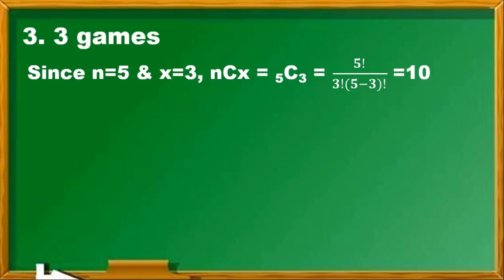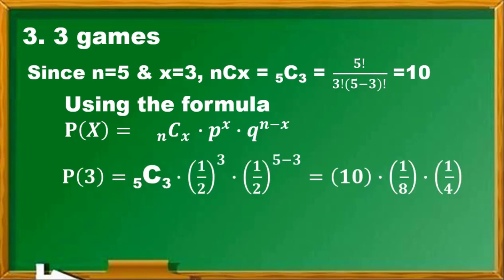Number 3: Probability of X equals 3, P(3). 5C3 is given to be 10. Then P(3) is 10 times 1/2 raised to 3, that's 1/8, and 1/2 raised to 5 minus 3—that is 5 minus 3 is 2—so 1/4. The answer is 5 over 16. If you divide by 2, it becomes 5 times 1 times 1, then it's 5. Then 8 divided by 2 becomes 4 times 4, which is 16. Final answer is 5 over 16 for P(3).